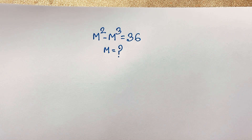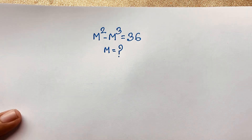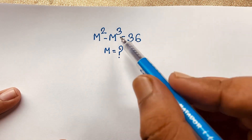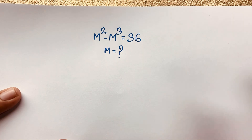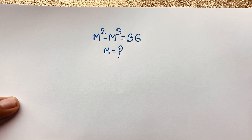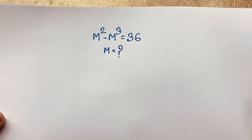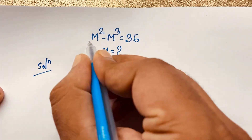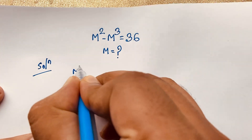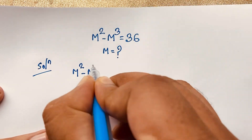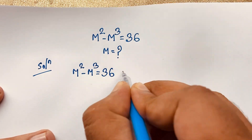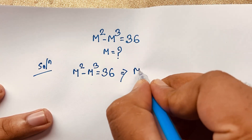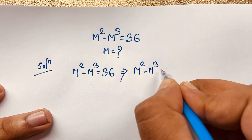Hello everyone, welcome to my YouTube channel. Today we have solved an interesting math problem. This question is m squared minus m cubed is equal to 36. What is m? How to solve this equation? Let's start the solution. It is m squared minus m cubed is equal to 36.